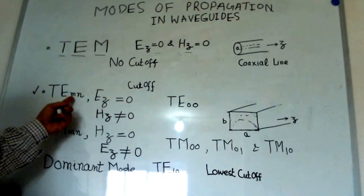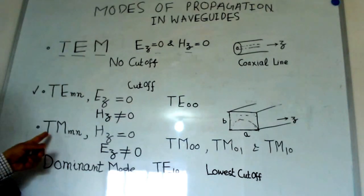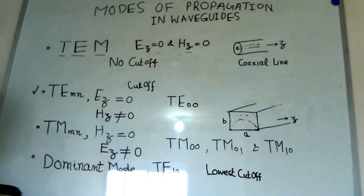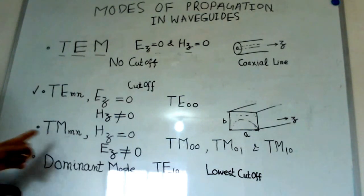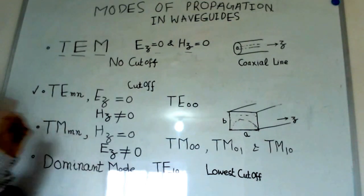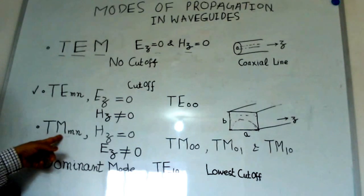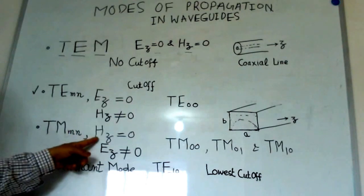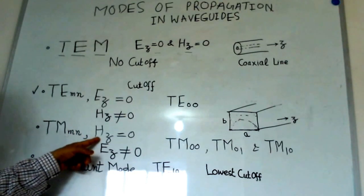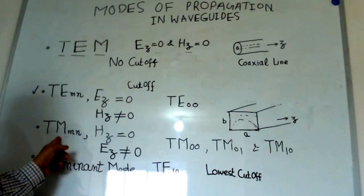Later we will let you know what are these M and N suffixes which are put along with the mode. The other kind of mode that exists on the waveguide is TMmn. That means transverse magnetic. When we say it is transverse magnetic, that means magnetic field is transverse. Hz component is zero. If Hz component is zero, then we say it is TMmn mode.